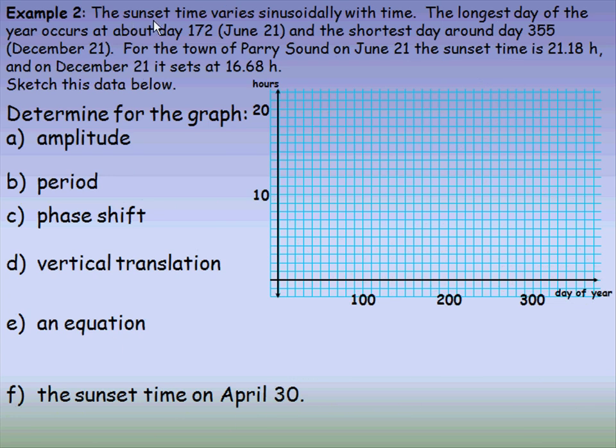In this example, the sunset time varies sinusoidally with time. The longest day of the year occurs around day 172, which is June 21st, and the shortest day around day 355, December 21st.